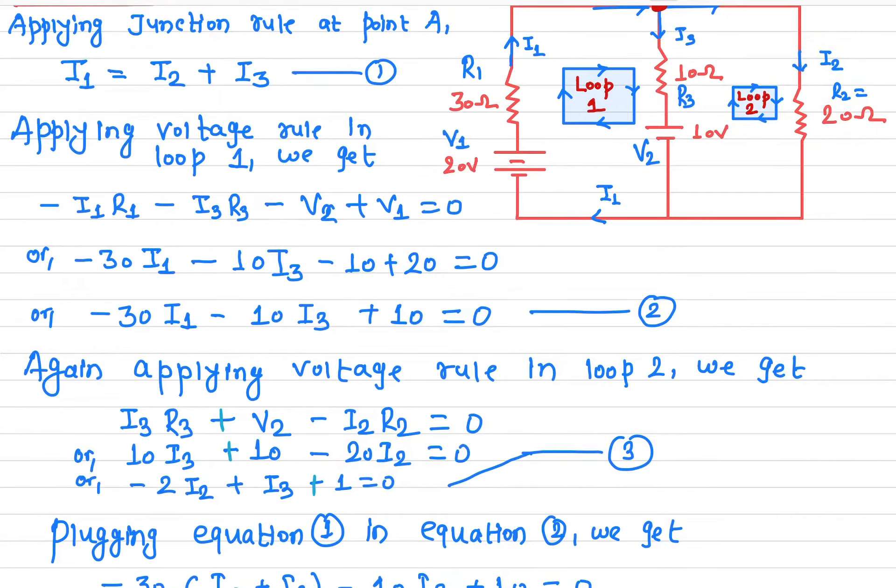Rearranging and dividing both sides by 10, we get 2·I2 + I3 + 1 = 0, just to make life simpler.